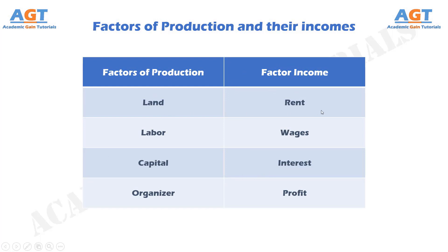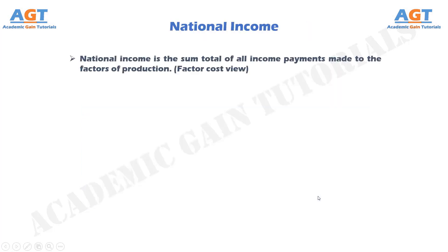Land is a factor of production whose income is called rent. Labor is a factor of production whose income is called wages. Capital is a factor of production whose income is called interest. Organizer is a factor of production whose income is called profit.